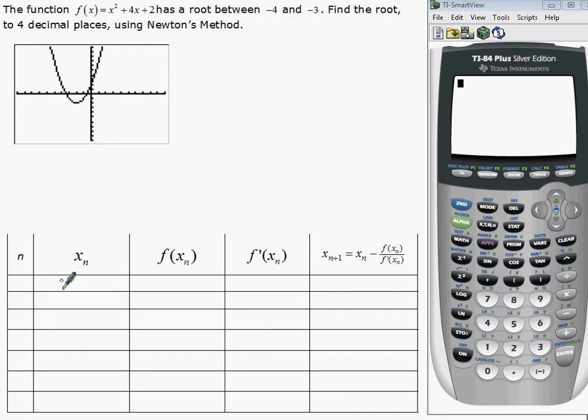And we'll start by estimating that to be about negative 3.5, somewhere in the middle. The first is purely an estimate or a guess, so as long as it's close to the values, it doesn't really make a difference what you put there.